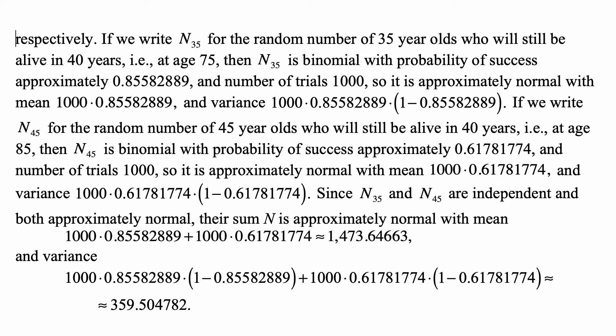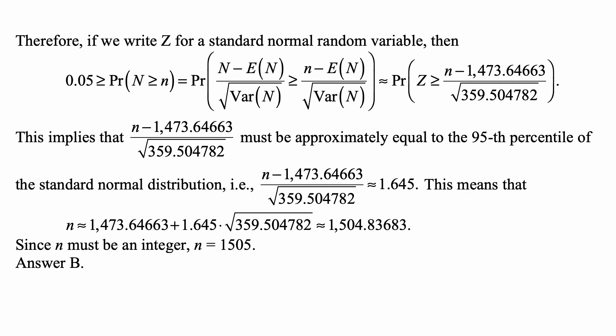Since N35 and N45 are independent and both approximately normal, the sum N is approximately normal with mean equal to the sum of the two means, which is 1,473.6463, and variance equal to 1,000 times the probability of success times 1 minus the probability of success for each group summed together, which turns out to be approximately 359.504782.